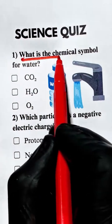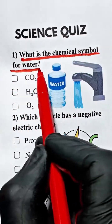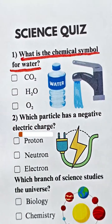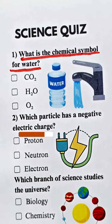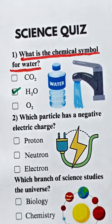Question 1. What is the chemical symbol for water? Answer B. H2O.